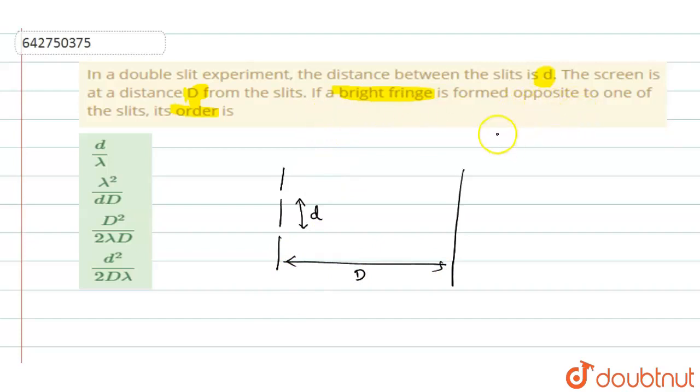If a bright fringe is formed opposite to one of the slits, see, if it is formed opposite to one of the slits at this point, then this distance, this whole distance is D. And so, this distance where it is formed, X will be equal to D by 2.